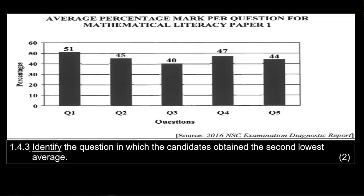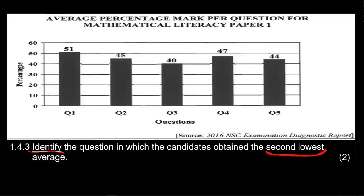The next question asks us to identify the question in which candidates obtained the second lowest average percentage mark — not the lowest, but the second lowest. If you arrange the data in ascending order, that number will be the one just after the lowest value. The lowest is 40, but that's not our answer. We're looking for the second lowest, which is 44 — and that's question number five. So the answer is question number five.